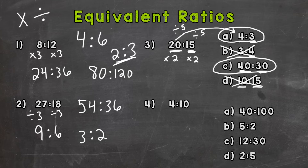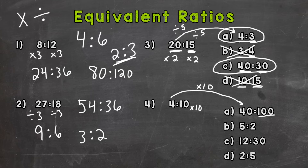Number 4: we have 4 to 10. Let's look at A — 40 to 100. How do we get 4 to equal 40? We multiply by 10. And 10 times 10 gives us 100. So we do have an equivalent ratio with 40 to 100.